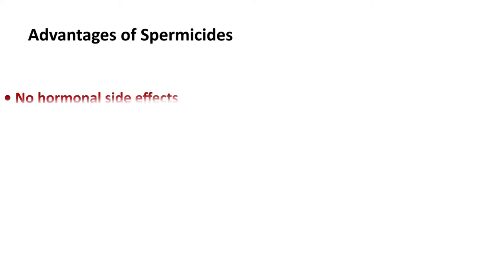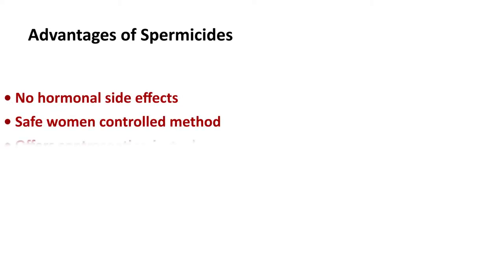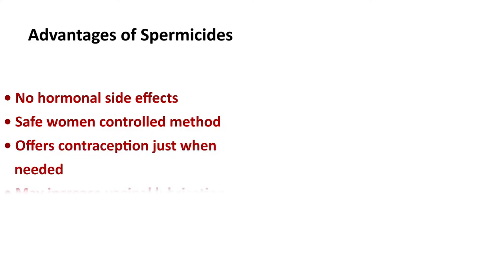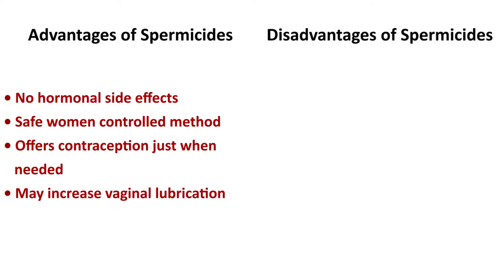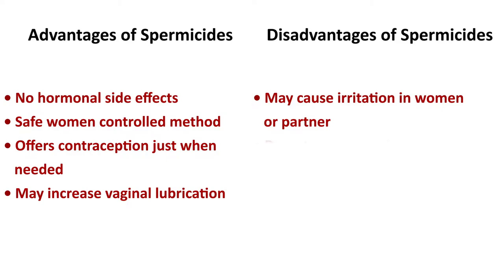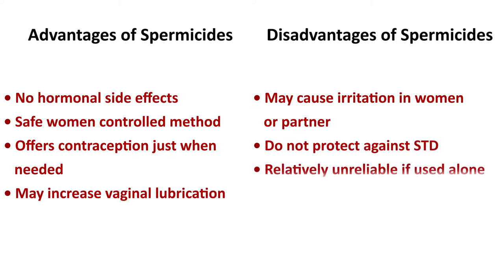Advantages of using spermicides: they have no hormonal side effects, they are a safe woman-controlled method, they offer contraception just when needed, and they may increase vaginal lubrication. Disadvantages: they may cause irritation in the woman or her partner, they do not protect against sexually transmitted diseases, and they are relatively unreliable if used alone.